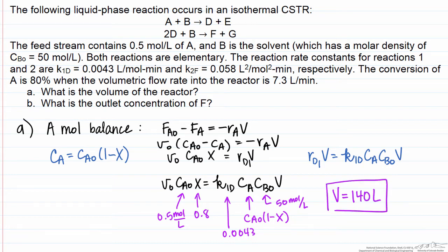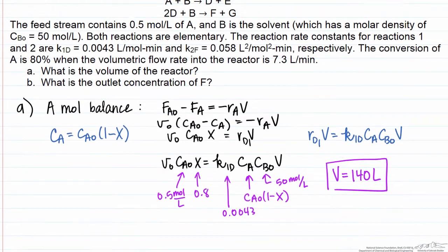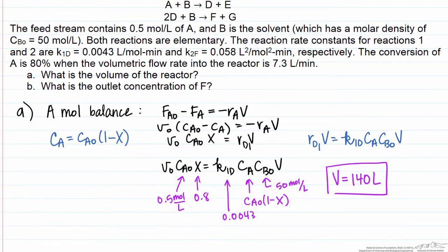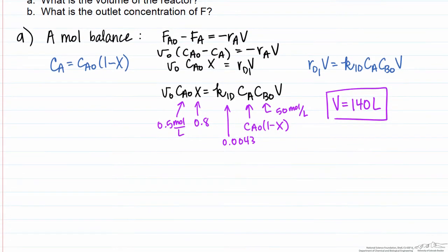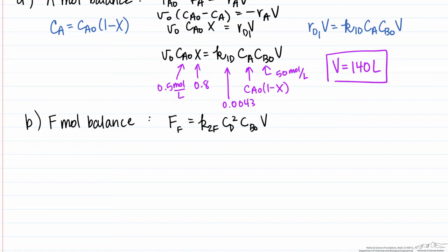In Part B, we want to know the outlet concentration of F. We'll write a mole balance on F — we can determine how much F is formed based on the kinetics and the reactor volume to solve for the molar flow rate of F out. We set up that material balance, which has a similar form to the one for A, except there is no inlet flow of F. The rate equals the rate constant times the concentration of D times the concentration of B, which is constant, times the volume.